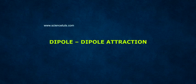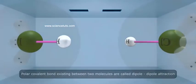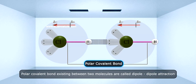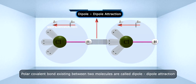Dipole-dipole Attraction: Polar covalent bonds existing between two molecules are called dipole-dipole attraction.